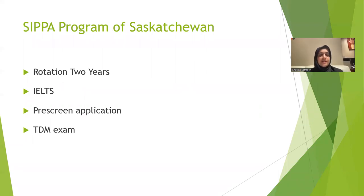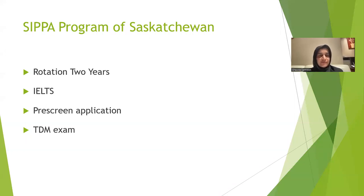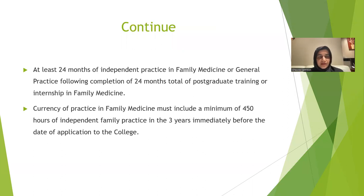In Saskatchewan, the program is called SEPA. They require two years of rotation plus family medicine, and IELTS — the same seven in each of the four categories, or OET in Alberta. Saskatchewan has a pre-screening application where they go through your credentials and approve you if you are eligible for their PRA route. They also require the TDM exam. Along with that, they want some independent practice and currency of practice — meaning at least you have worked in the past three years in independent practice, a minimum of 450 hours in family medicine.